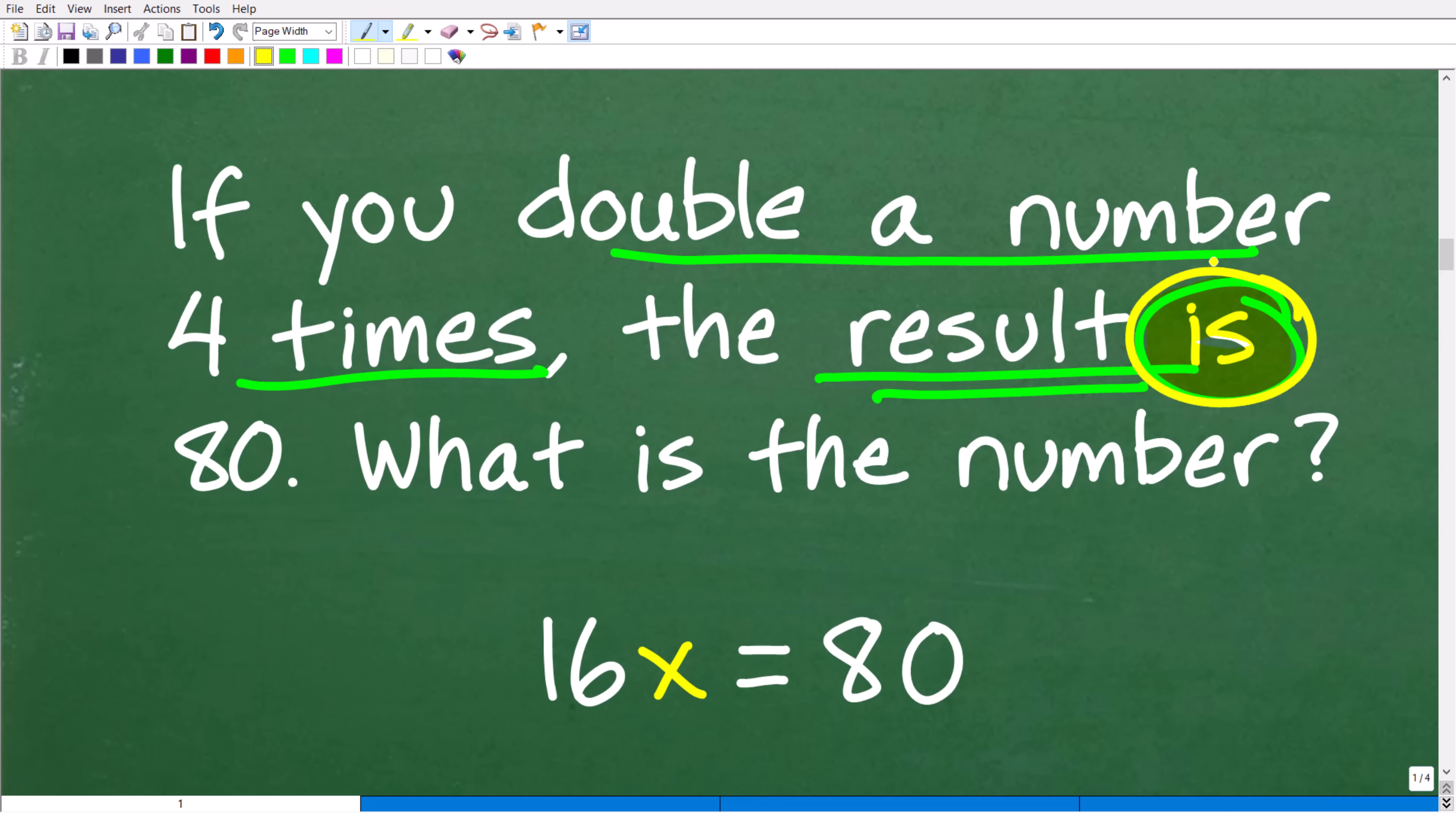And the magic word here is this word right here. This is an awesome word in algebra word problems because is is always the equal sign. So, if we double a number four times, the result is, so this is going to be translated as the equal sign, is equal to 80.